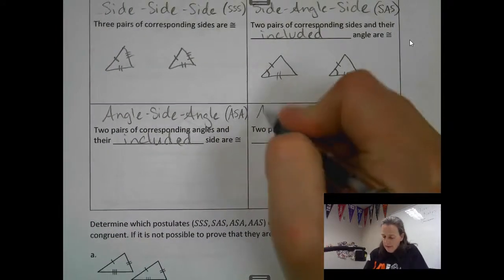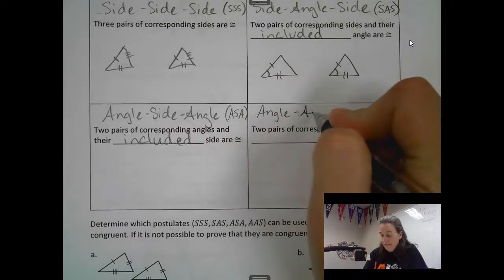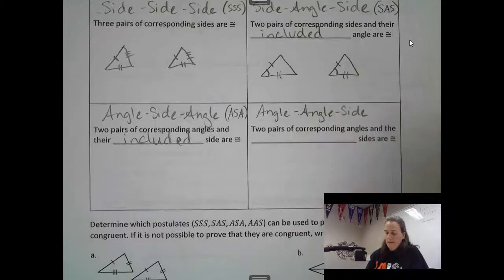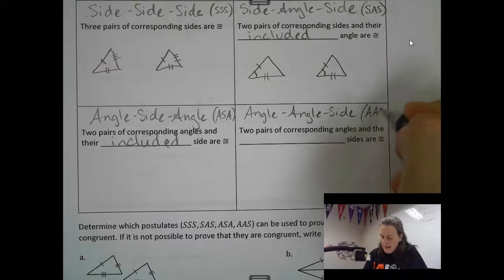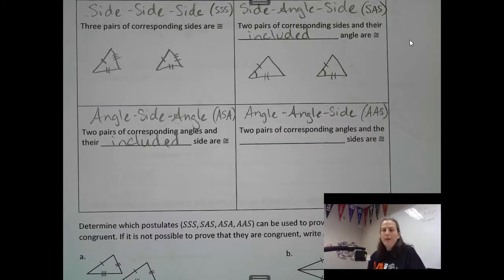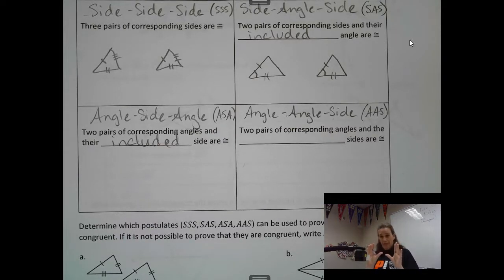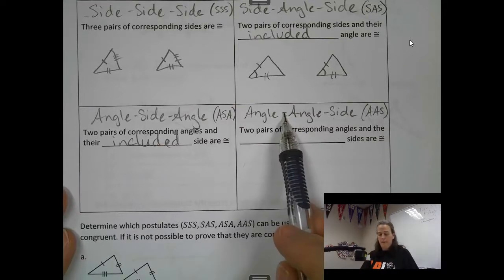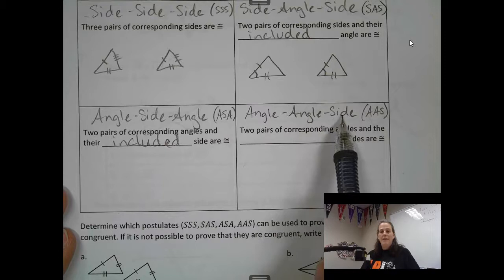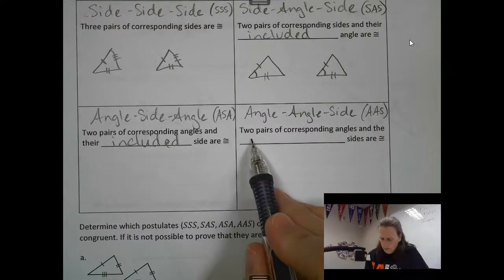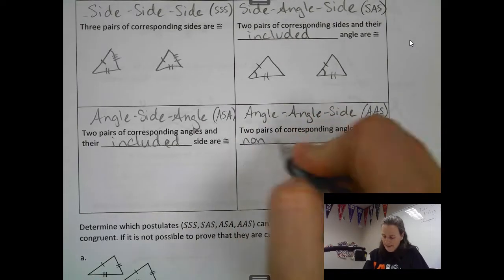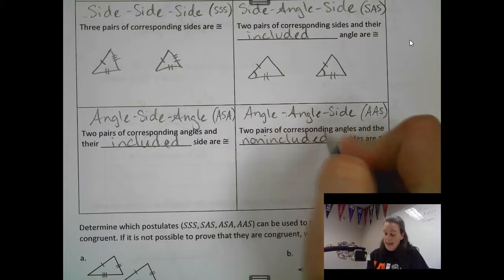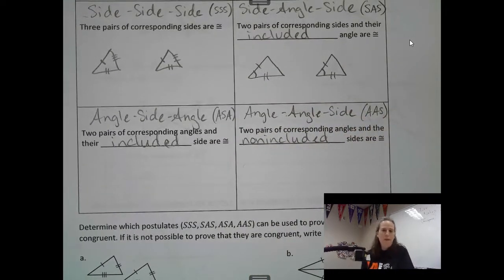The last one is Angle-Angle-Side, or AAS. The names actually tell us what order they need to be in. Two pairs of corresponding angles right next to each other, and then the side after that — so it's not between them, it's next to them. That's the non-included side, which means it's not in between the angles, it's adjacent to them.